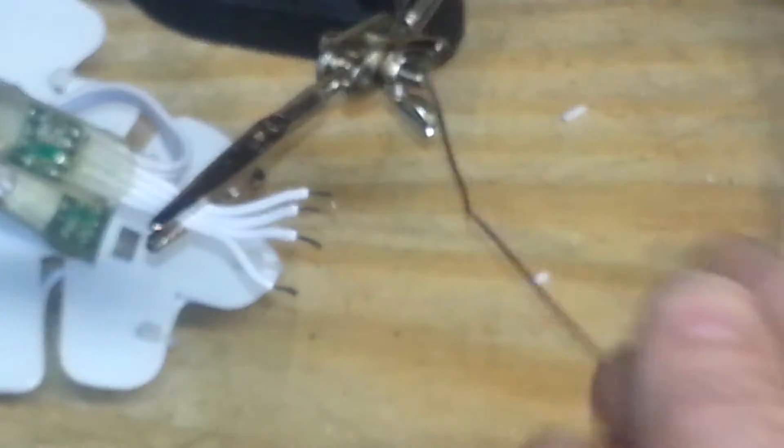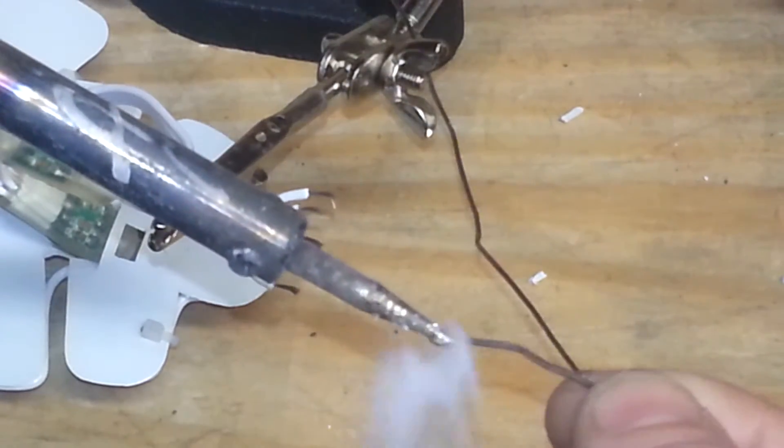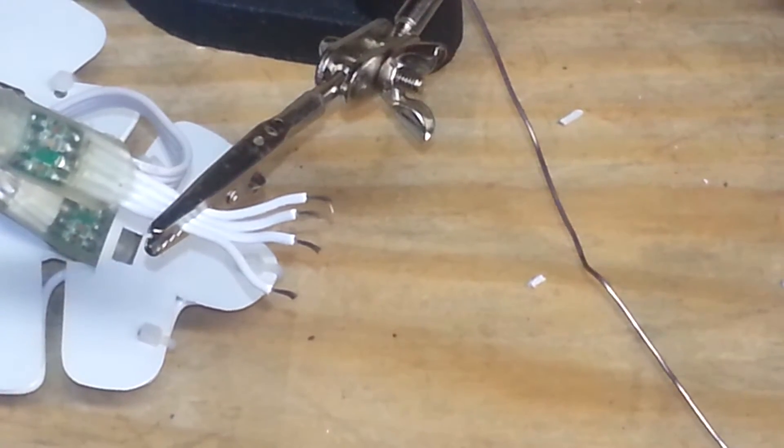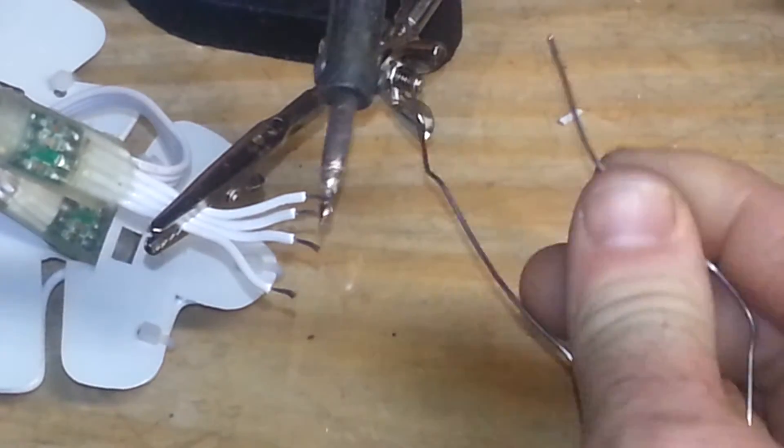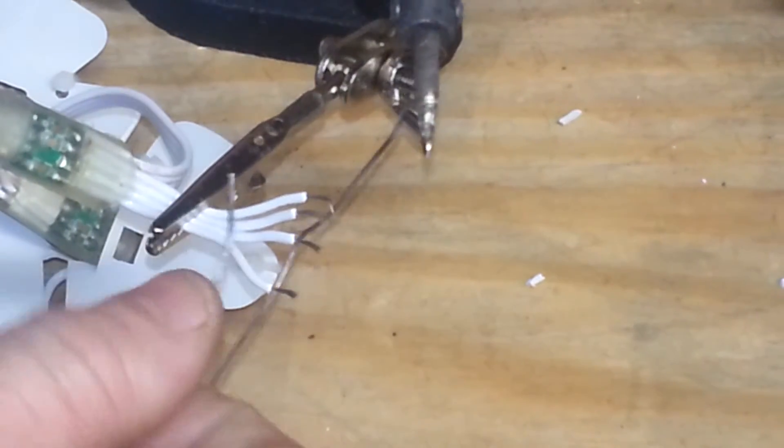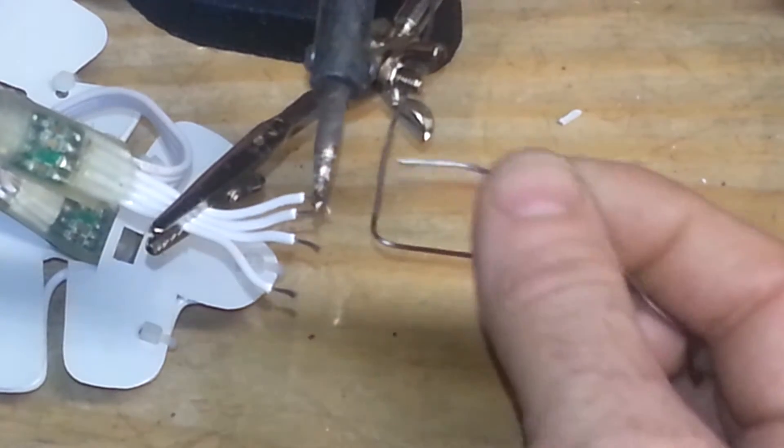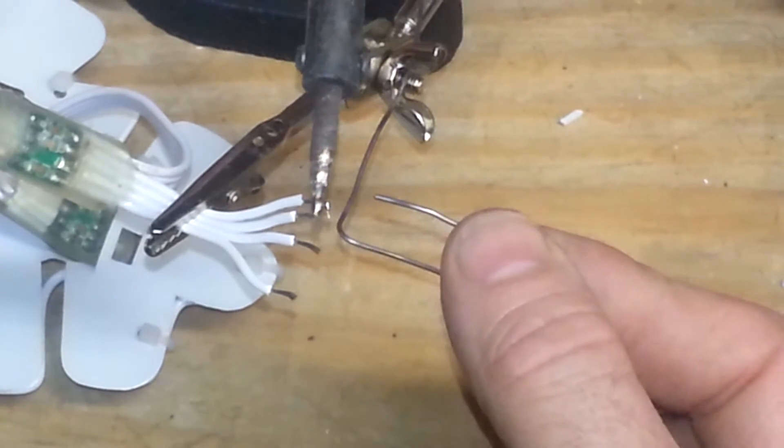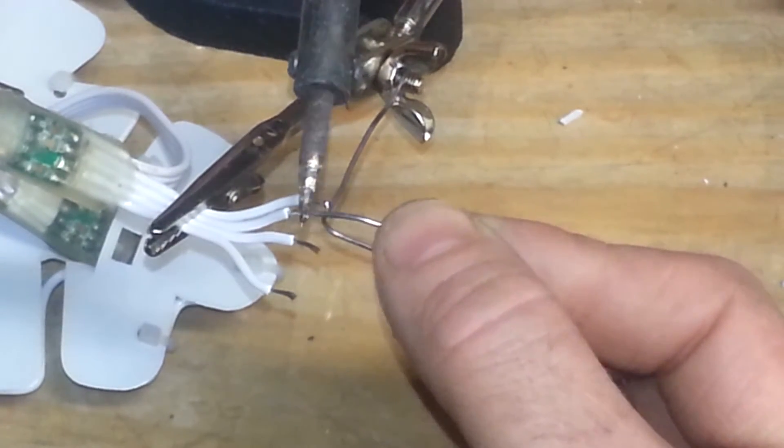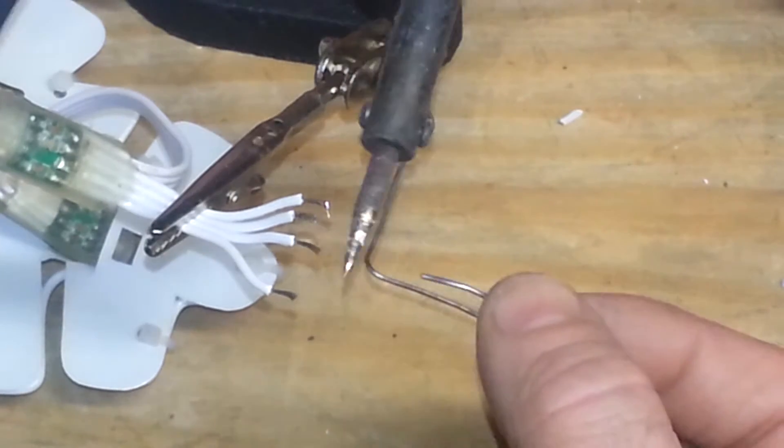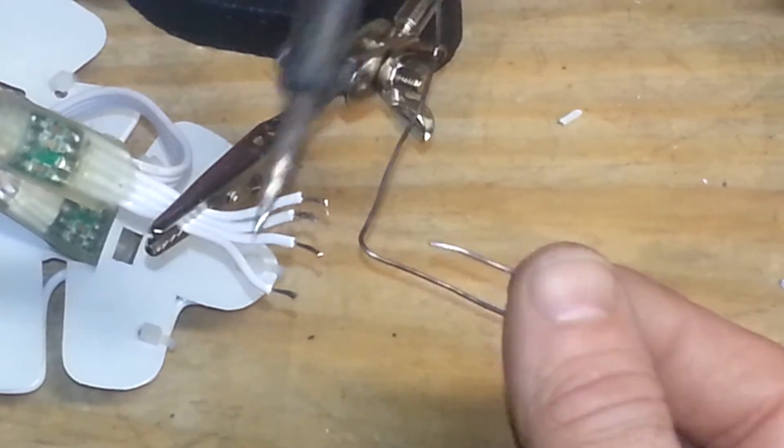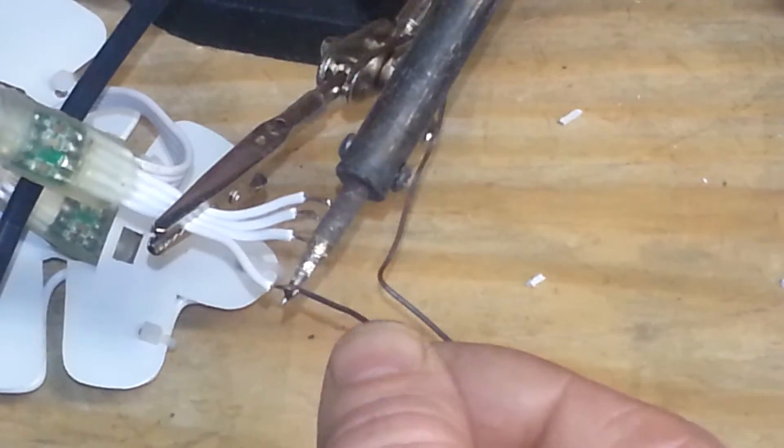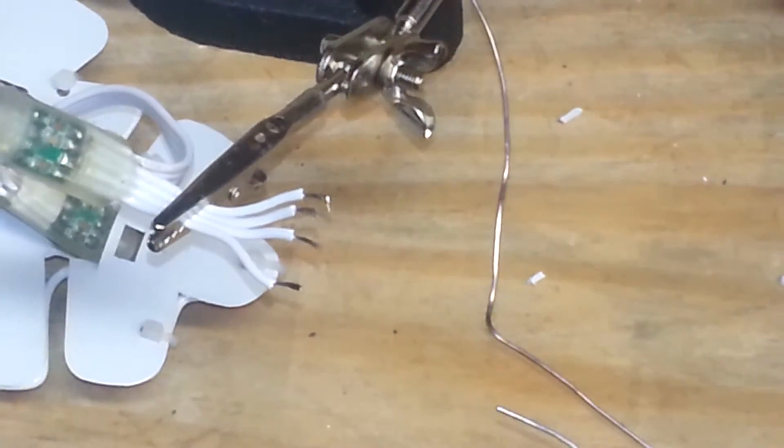And I'm just going to tin the end of it here, and get some solder on it. And the reason we tin the end is to dissipate the heat. Now I'm going to hold from underneath the heat, and I'm going to add the solder from the top of it, and it just kind of melts right on. It doesn't take a lot. There we go, so there's the tinned end.